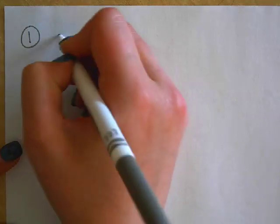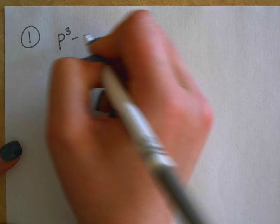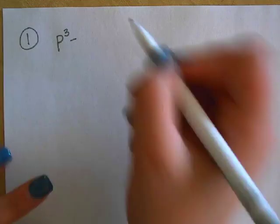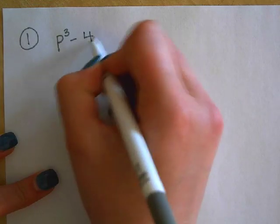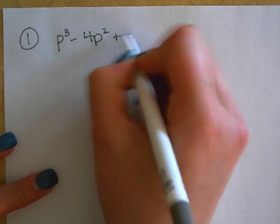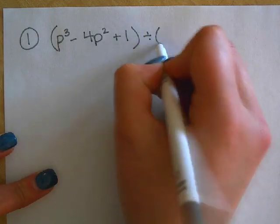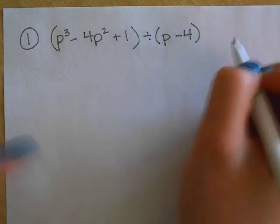So here is the problem we're going to write down. Are you ready? Or not write down if you don't feel like it. We have P to the third. P to the third, that's where we're starting. Here we go. P to the third minus 4P squared plus 1 divided by P minus 4.